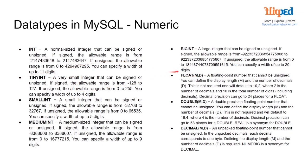Moving on to our floating point, double precision, and decimal. Our floating point number cannot be unsigned. You can define the display length, m, and the number of decimals, d. This is not required and will default to 10,2 — where 2 is the number of decimals and 10 is the number of digits including decimals. Decimal precision can go to 24 places for a float.